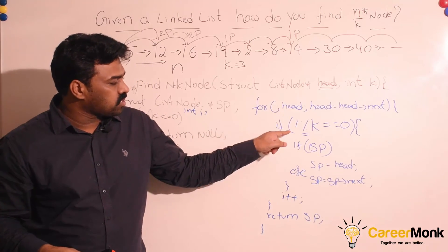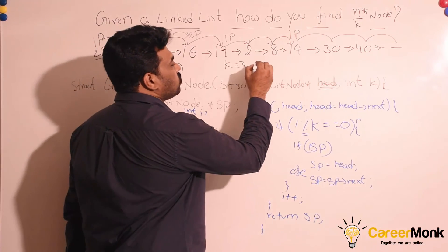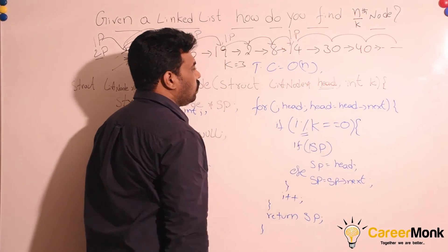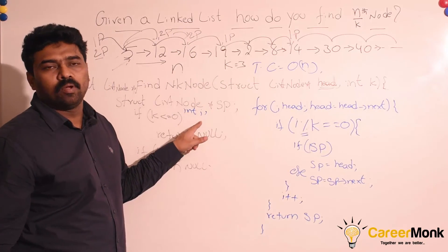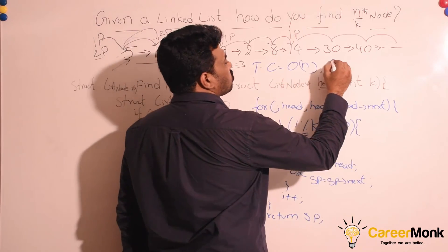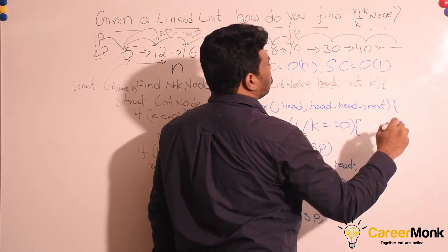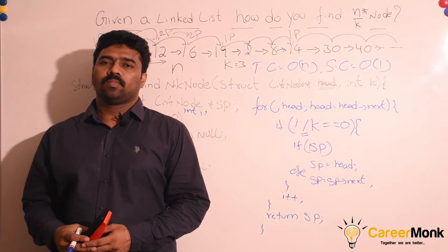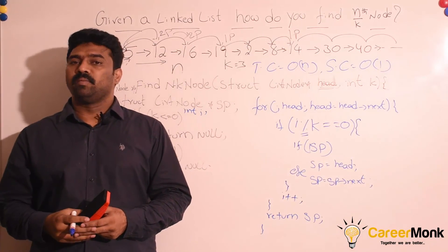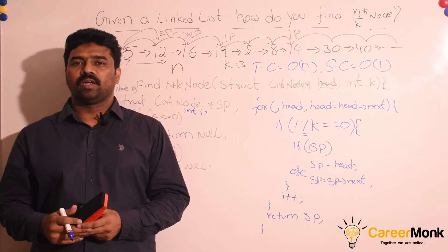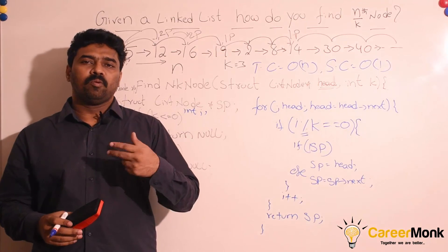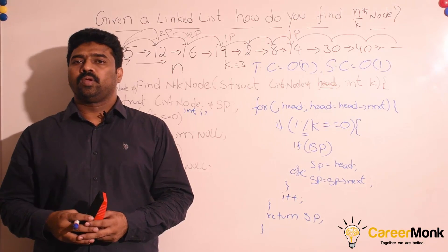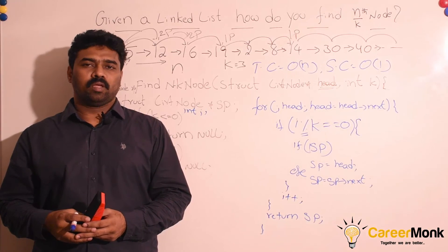Since we are using only one traversal for finding the n/kth node, the running time of this solution is O(n). The number of variables is constant — two variables — so the space complexity is O(1). We have seen multiple solutions for this problem. Trying different data structures gives multiple solutions with different time and space complexities. We will follow a similar approach for all remaining problems. For Java and Python code, you can refer to the GitHub location of our CareerMark.